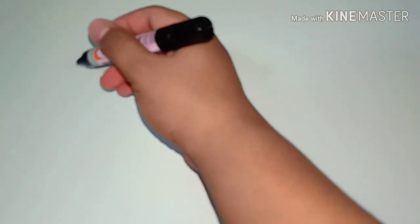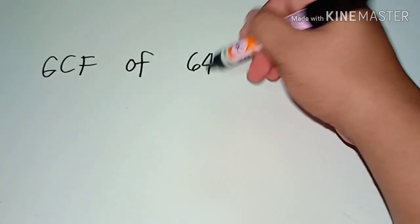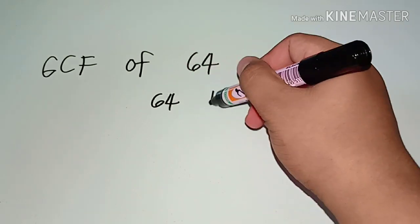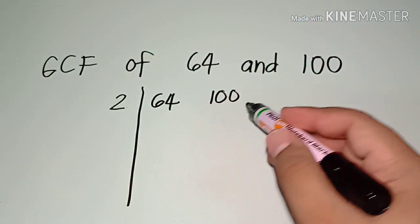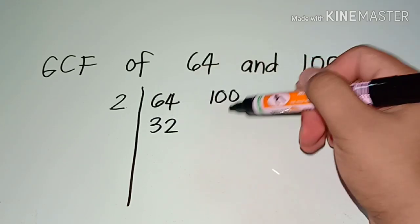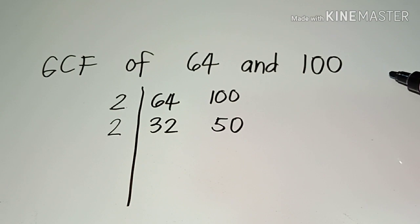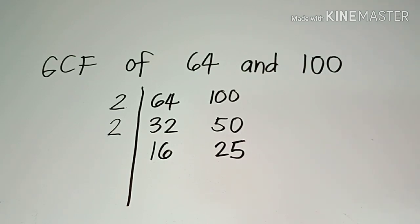Last example: what if we are looking for the greatest common factor of 64 and 100? I'll be using the ladder method again. Write 64 and 100, then divide by a common number. Since both are even, start with 2. 64 divided by 2 is 32, and 100 divided by 2 is 50. Still even numbers, so divide by 2 again. 32 divided by 2 is 16, and 50 divided by 2 is 25. Since we cannot simplify 16 and 25 any further, we stop there.